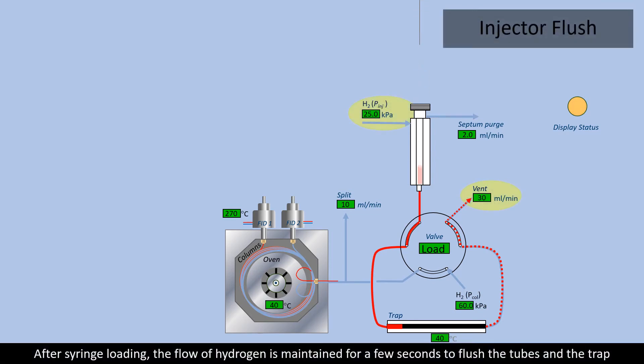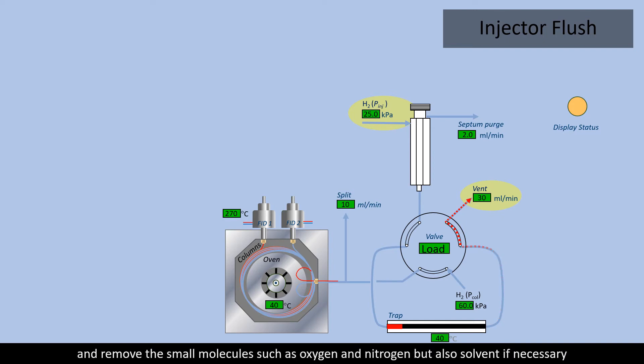After syringe loading, the flow of hydrogen is maintained for a few seconds to flush the tubes and the trap, and removes the small molecules such as oxygen and nitrogen, but also solvent if necessary.